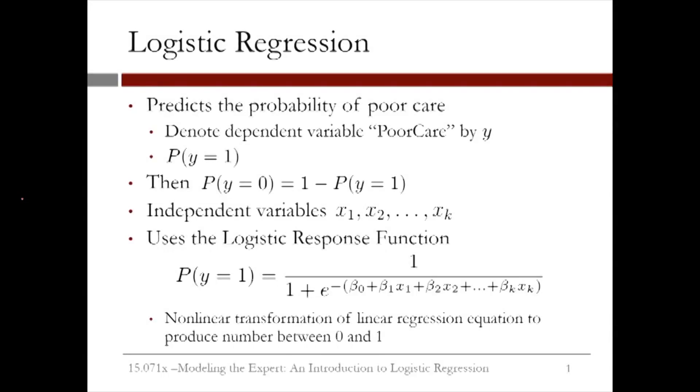Logistic regression predicts the probability of the outcome variable being true. In this example, a logistic regression model would predict the probability that the patient is receiving poor care, or if we denote the poor care variable by y, the probability that y equals 1. For the remainder of this lecture, we will denote poor care by 1 and good care by 0.